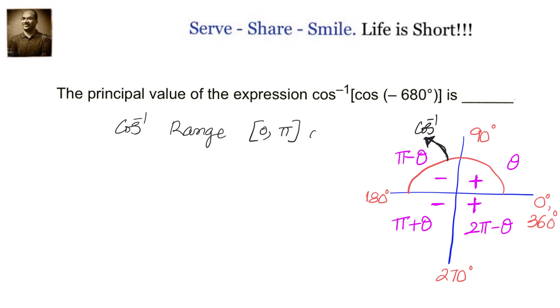Let us understand how we can convert the given angle into an angle which is in the range of cos inverse. Cos inverse is 0 to 180 degrees: 0 to 90 first quadrant, 90 to 180 second quadrant.